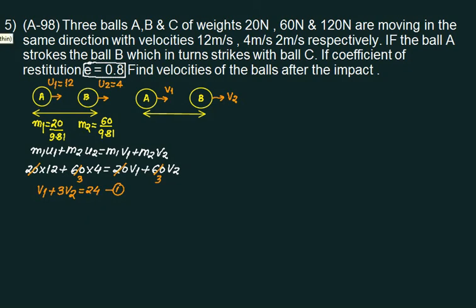Next, I can apply coefficient of restitution. Coefficient of restitution is 0.8 given to you. What is the velocity of separation? V2 minus V1. And what is the velocity of approach? U1 minus U2. So 0.8, V2 minus V1 upon U1 minus U2 is 12 minus 4. 12 minus 4 is 8, 8 times 0.8 is 6.4. So you have minus V1 plus V2 equal to 6.4. This is my equation 2.